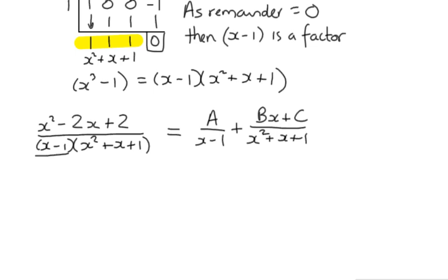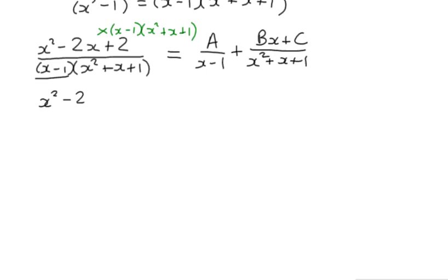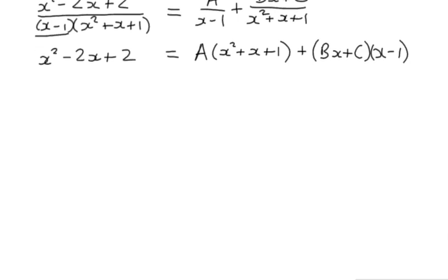We can follow all the usual steps. Multiply through by the denominator. Which, on the left-hand side, will give us just the numerator, x squared minus 2x plus 2. And on the right-hand side, if we do our multiplication, we can see that for the first fraction, the x minus 1 terms will cancel, leaving us with A multiplied by x squared plus x plus 1. And for the second fraction, the quadratic term will cancel, leaving us with Bx plus C in a bracket multiplied by x minus 1. So here we have our equation.